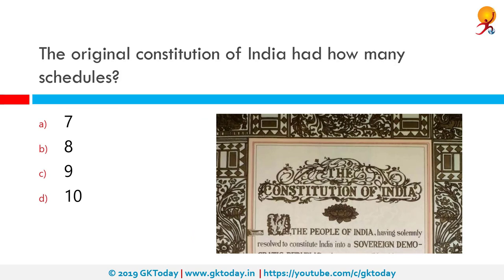The original constitution of India had how many schedules? The correct answer is 8. Schedules are lists in the constitution that categorize and tabulate bureaucratic activities and policy of the government. The 9th schedule was added via the First Amendment Act, while the 10th schedule was first added by the 35th Amendment, which made Sikkim an associate state. Once Sikkim became a state, the 10th schedule was repealed but later re-added by the 52nd Amendment Act 1985 in the context of the anti-defection law. The 11th schedule was added by the 73rd Amendment covering Panchayati Raj institutions, and the 12th schedule was added by the 74th Amendment covering municipalities.